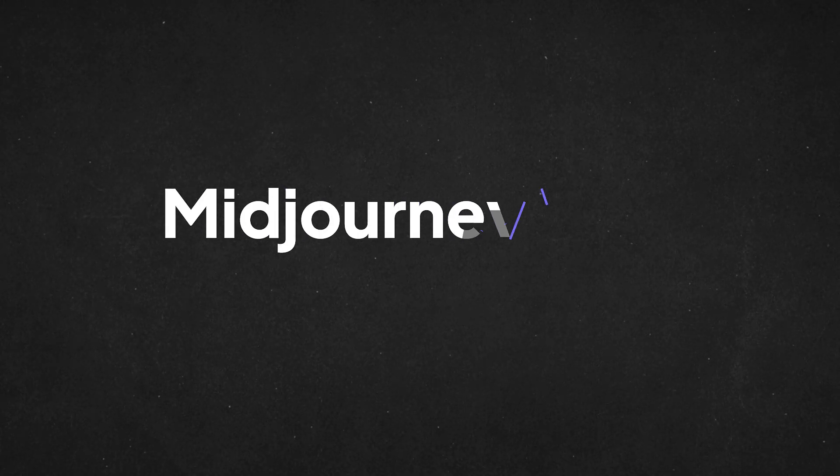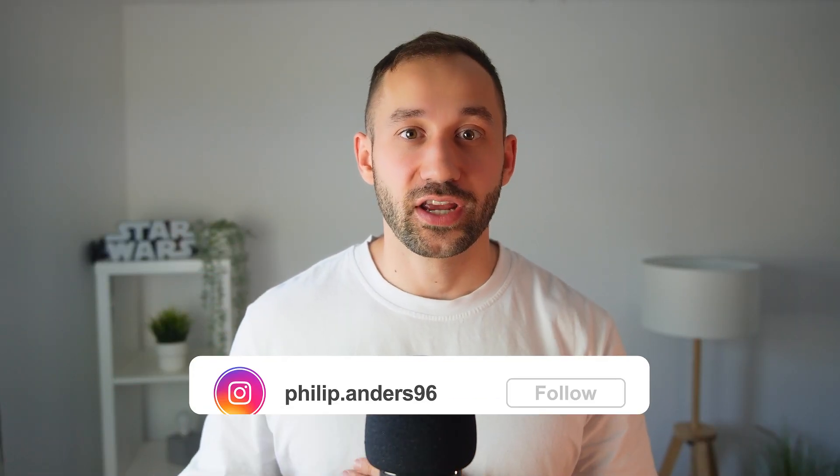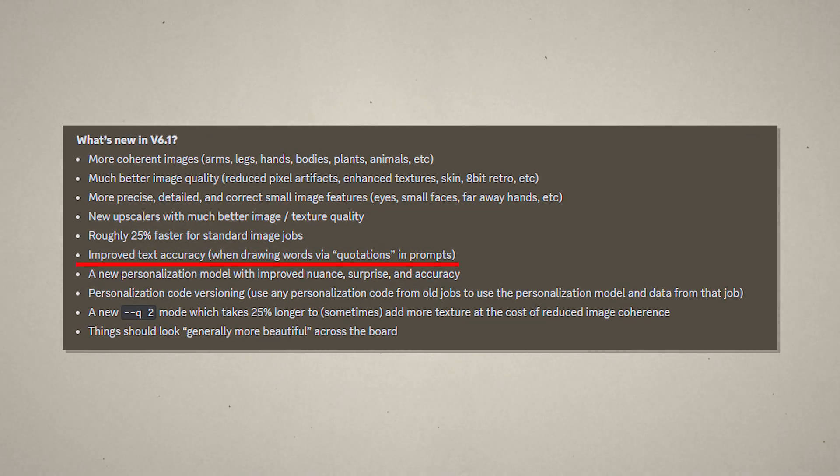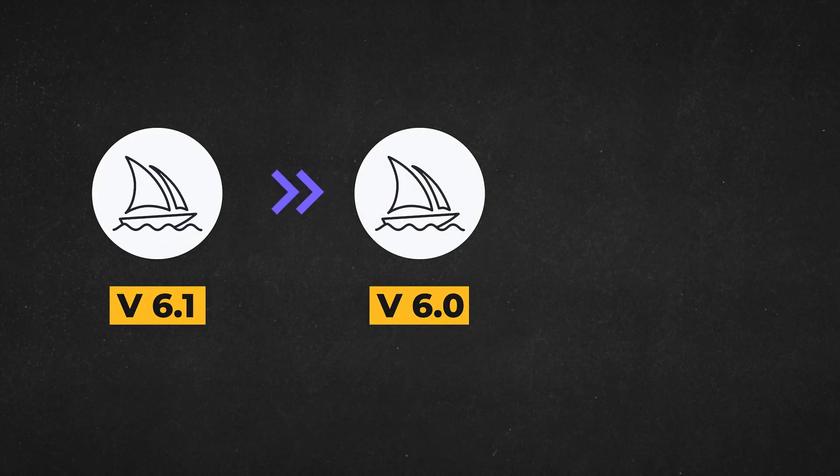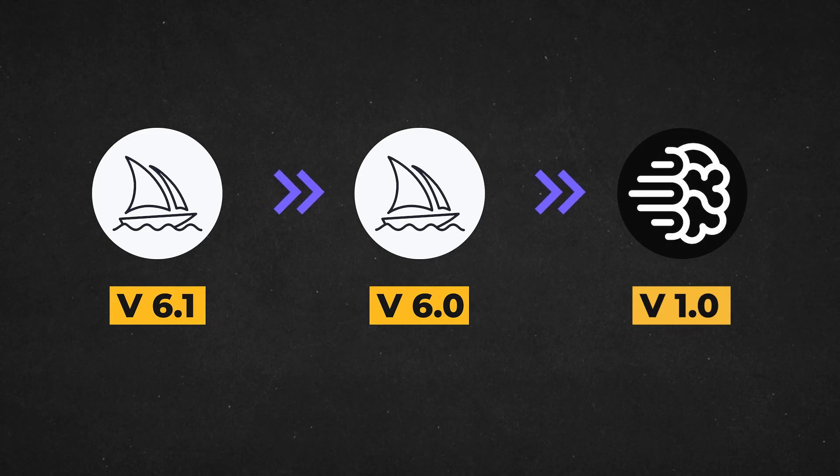Midjourney just released their new version called 6.1, and even though I haven't really been paying much attention to Midjourney, something spiked my interest in their release notes — the fact that it's supposed to have improved text accuracy, which can be very useful for print-on-demand sellers. So I thought I'd do a quick video comparison between the new version of Midjourney and the old one, as well as a comparison with the current version of Ideogram, which in my opinion has the highest text accuracy in the AI art space.